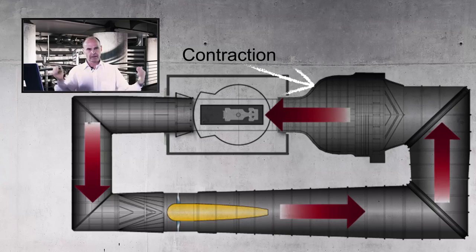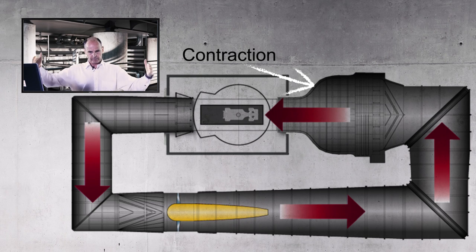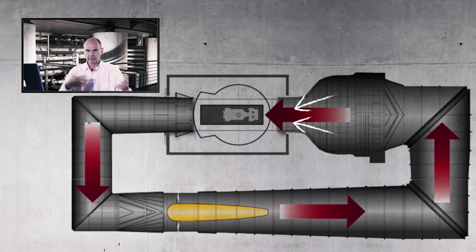Then we have what we call a contraction, a bell mouth. It takes the air and compresses it to a smaller size. We can't create or remove air, so it has to speed up as it approaches the working section. One of the things this does is it takes the remaining tiny little bits of turbulence that are still there after passing through your wire meshes.